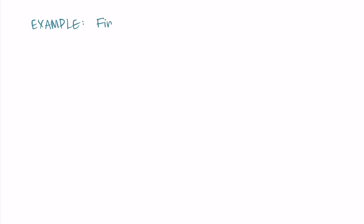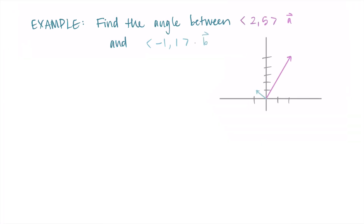Let's try an example to see how we can find the angle between vectors using the dot product. We'll find the angle between the vector (2, 5) and the vector (-1, 1). I'll label the first vector as a and the second as b and graph them. We're in two dimensions, so I can graph both vectors. The angle looks close to 90 degrees, but we'll see it's actually a little smaller — which is a good reason to have a formal computation rather than just guessing from the picture.